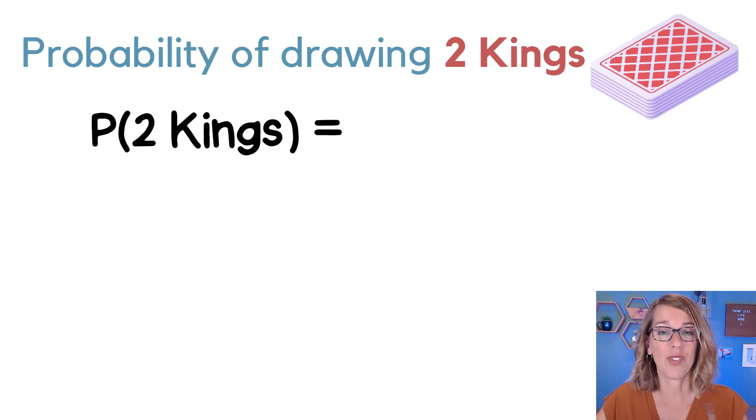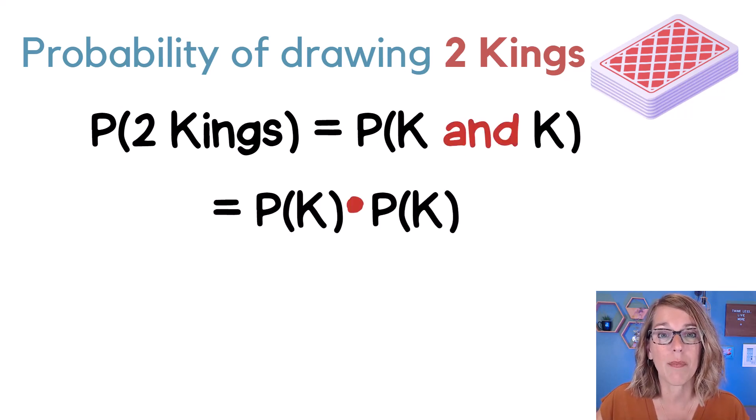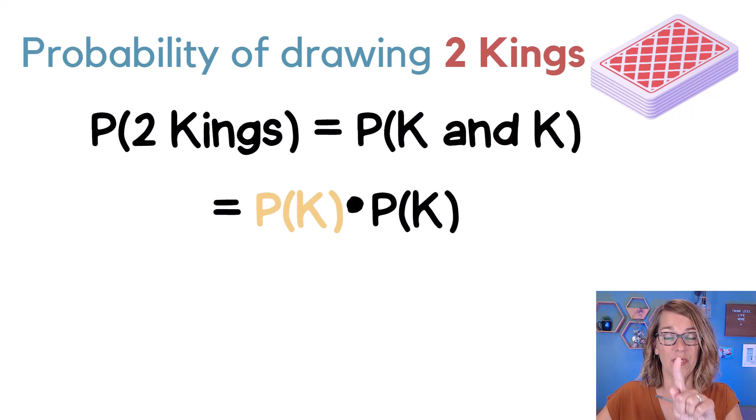So I've got the probability of getting two kings, which I can break down as the probability of getting a king and a king. That 'and' in probability means that we're going to be multiplying the two separate probabilities together. We're going to do the probability of the first king to start off with.